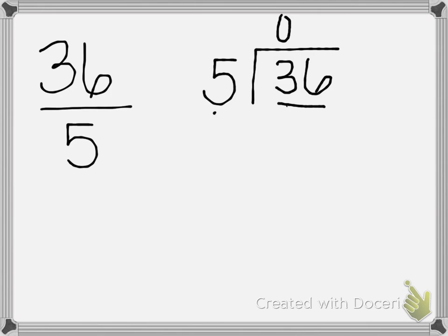Think of your multiples of 5: 5, 10, 15, 20, 25, 30, 35, 40. Well, 5 can't go into 36 evenly, but counting up — 5, 10, 15, 20, 25, 30, 35 — 5 can go into 36 seven times. So 7 times 5 is 35.